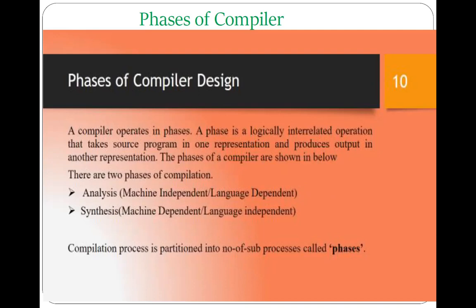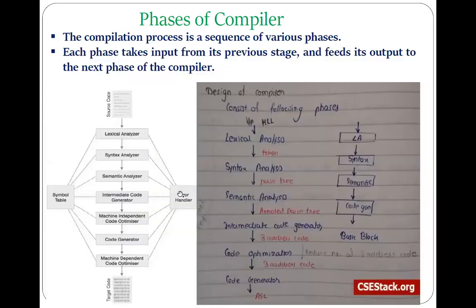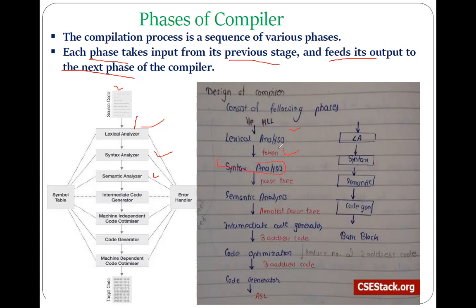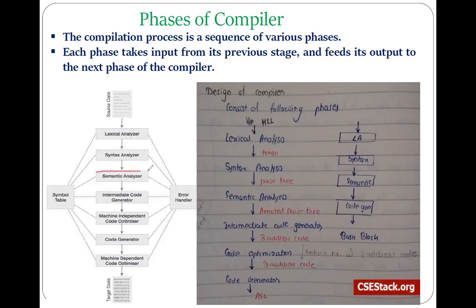There are two main phases of compilation: the analysis phase and the synthesis phase. The analysis phase consists of three main phases: lexical analysis, syntax analysis, and semantic analysis. Each phase takes input from its previous stage and feeds its output to the next phase. The first phase takes source code and produces tokens; the second phase takes tokens and produces a parse tree. The role of the lexical analyzer is production of tokens and detection of lexical errors, while the role of the syntax analyzer is to check whether a sentence or expression is syntactically correct and detect syntactical errors. Now we are at the third phase — semantic analysis.